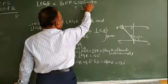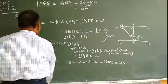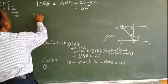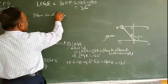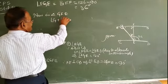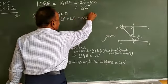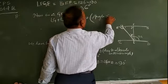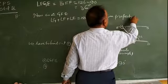This angle is 36 degrees and this angle is 90 degrees. Now, using the angle sum property of triangle GFE: angle G plus angle F plus angle E is equal to 180 degrees. This is the angle sum property of triangle GFE.